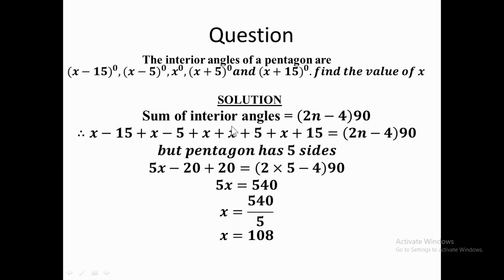You sum all the angles given: (x minus 15) plus (x minus 5) plus x plus (x plus 5) plus (x plus 15) equals (2n minus 4) times 90. We know a pentagon has five sides, so n equals 5. Collecting like terms, you have five x terms. For the constants: minus 15 minus 5 gives minus 20, and plus 5 plus 15 gives plus 20, so the constants cancel to zero. You are left with 5x on the left-hand side.